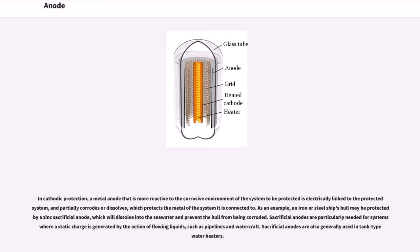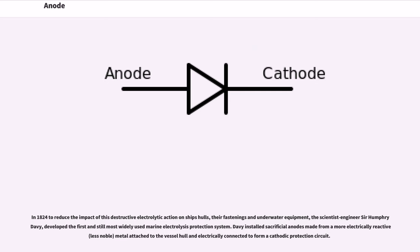Sacrificial anodes are also generally used in tank-type water heaters. In 1824, to reduce the impact of this destructive electrolytic action on ships' hulls, their fastenings and underwater equipment, the scientist-engineer Sir Humphry Davy developed the first and still most widely used marine electrolysis protection system. Davy installed sacrificial anodes made from a more electrically reactive (less noble) metal attached to the vessel hull and electrically connected to form a cathodic protection circuit.